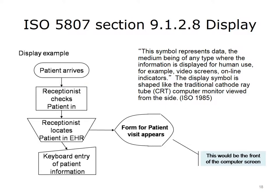The display symbol represents data displayed for human use, for example on video screens or online indicators (ISO 1985). The display symbol is shaped like the traditional cathode ray tube (CRT) computer monitor viewed from the side, which may be less intuitive for people who have only used flat screens. The flowchart example shows: patient arrives; receptionist checks patient in; receptionist locates patient in EHR; form for patient visit appears on computer screen; and keyboard entry of patient information.